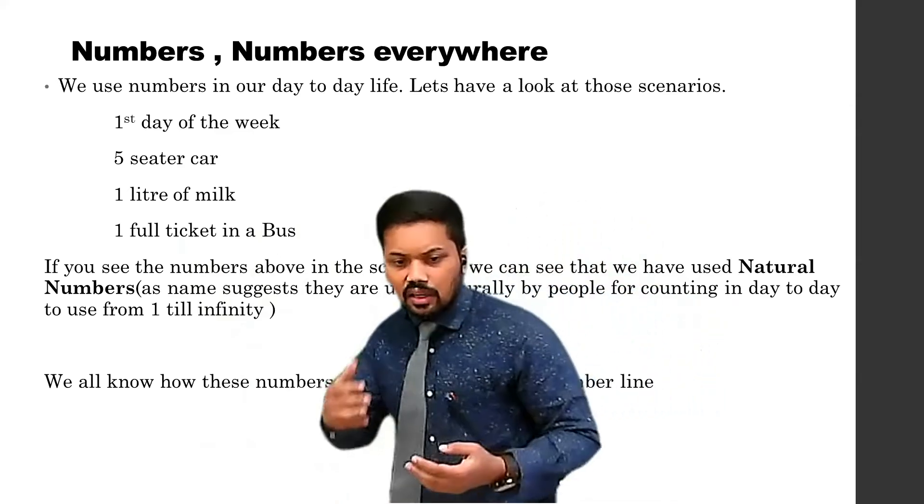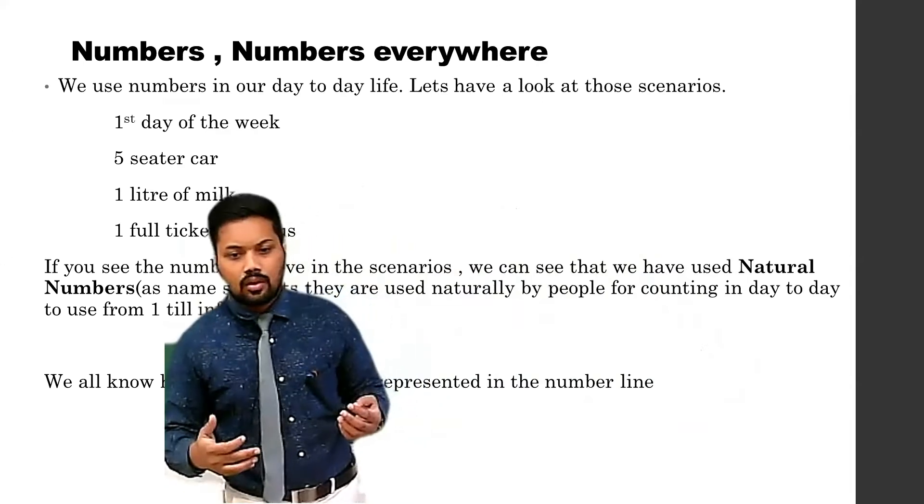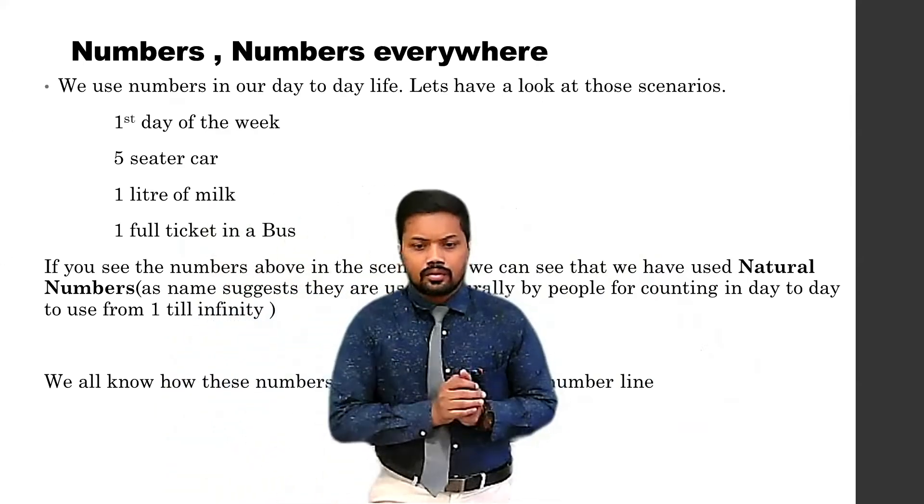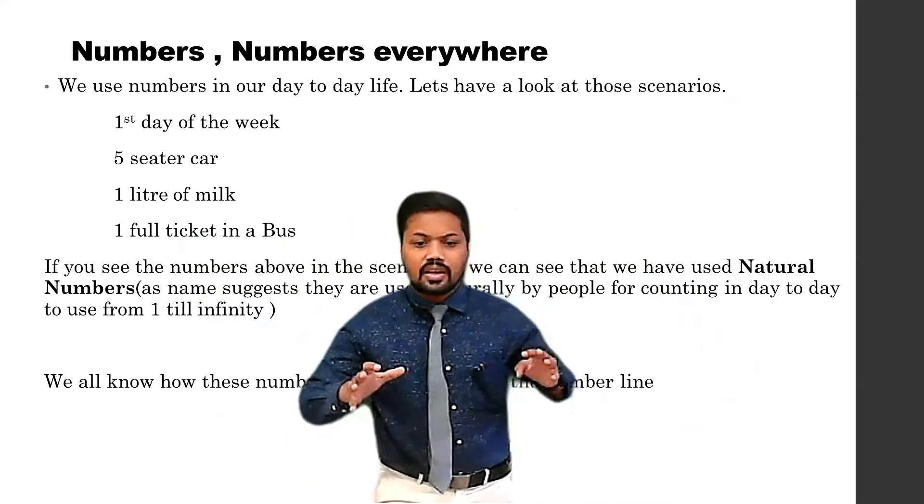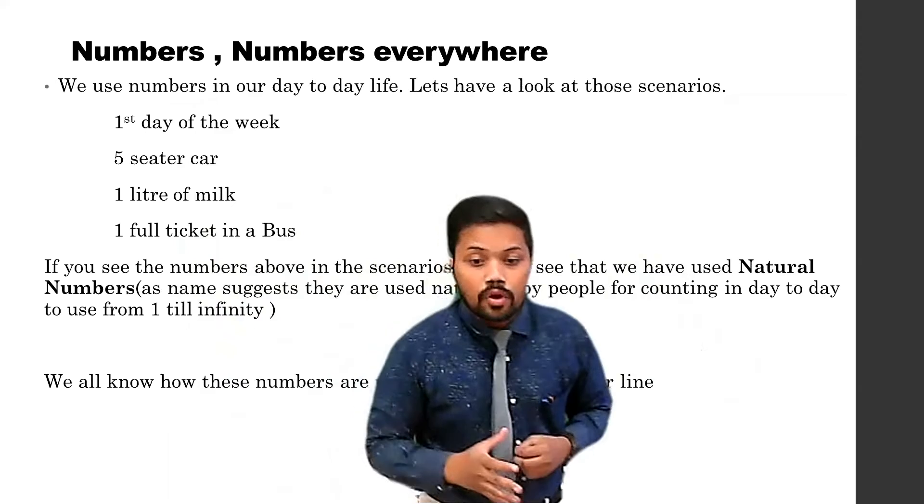Five-seater car, one liter of milk, one full ticket in a bus. So what exactly are we saying? Yes, we are discussing the concept called natural numbers. We all know these numbers are represented on the number line.